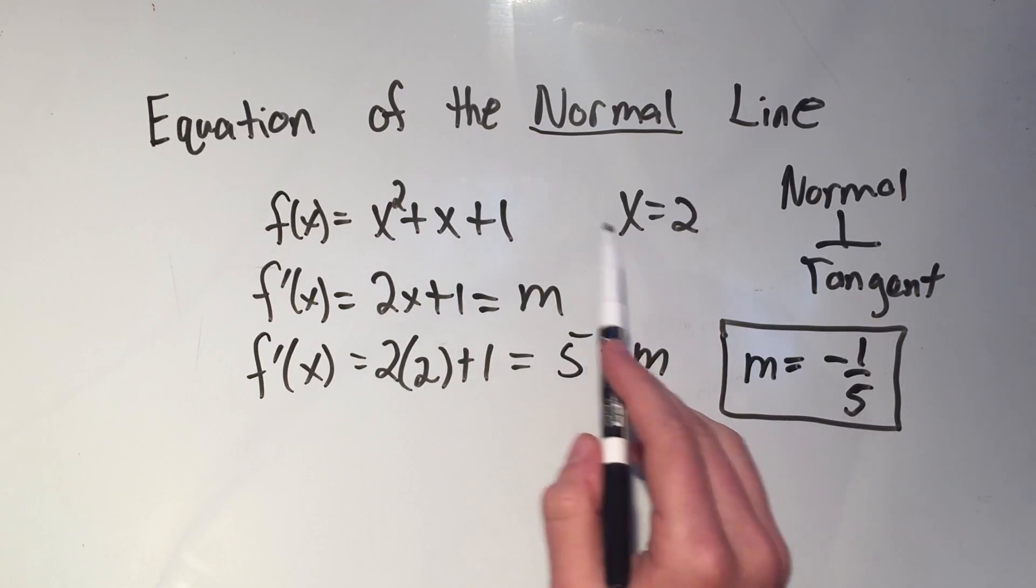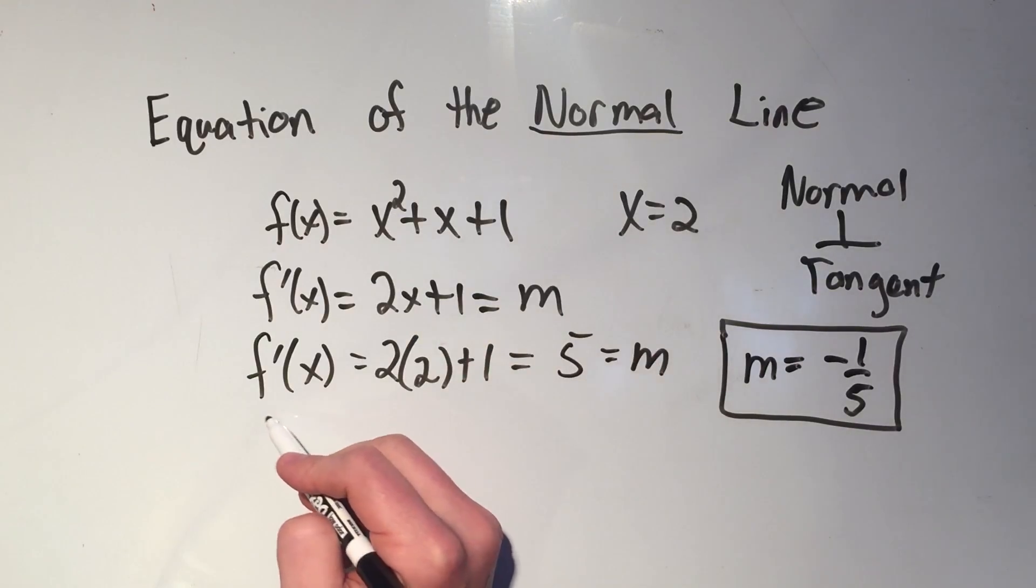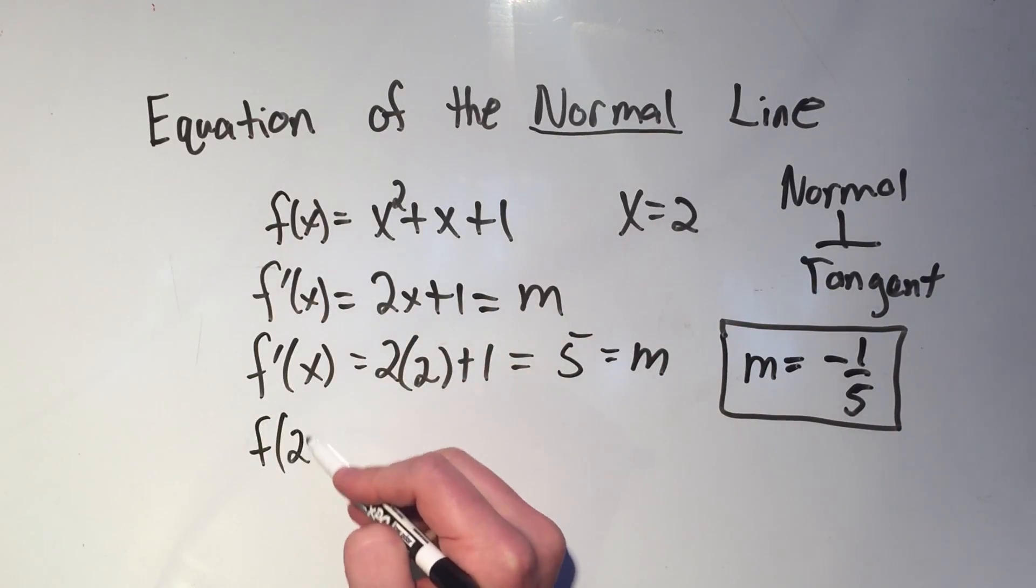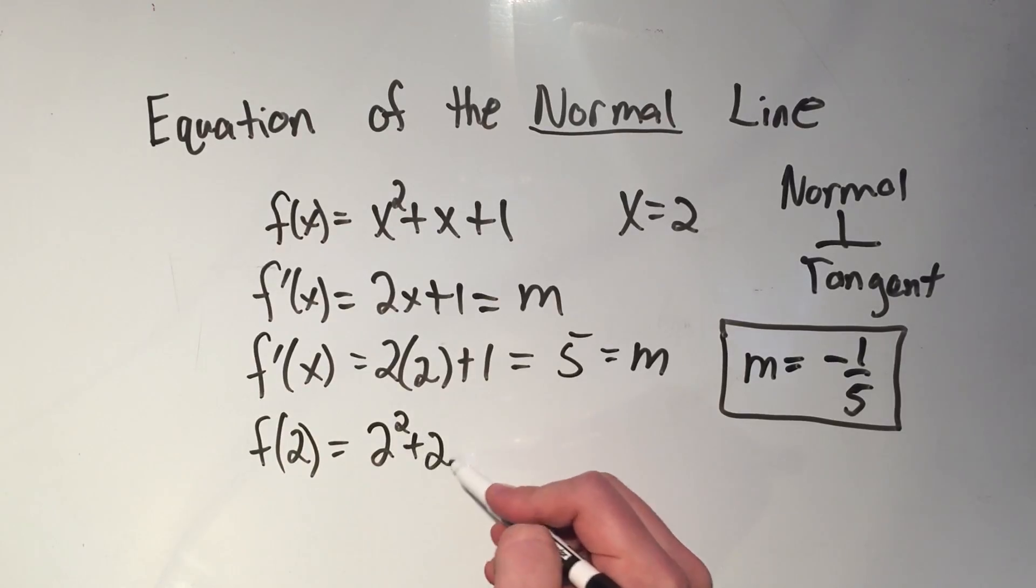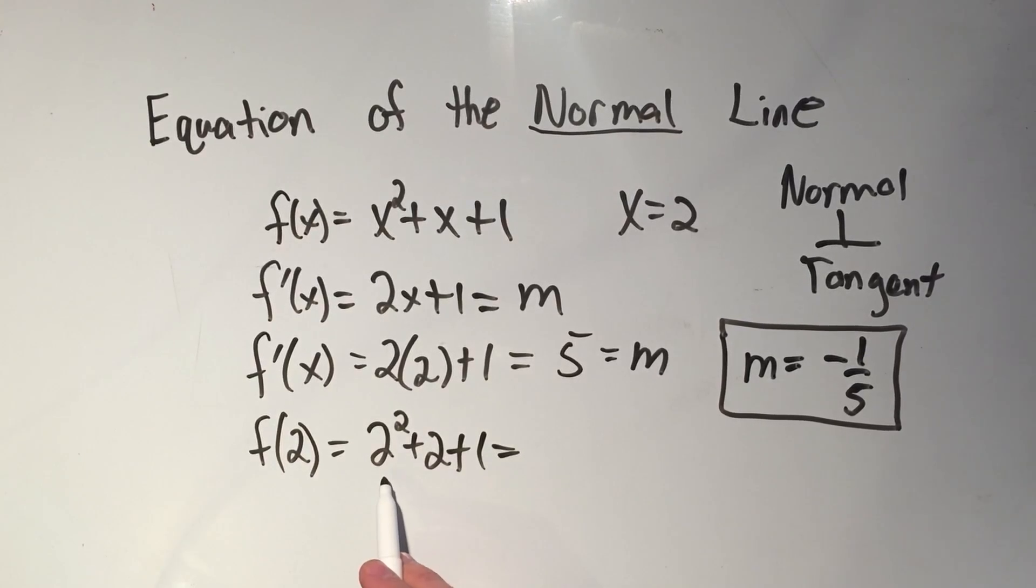To find the point, I'll plug my x value into the function to get my y value. So that's 2 squared plus 2 plus 1. 2 squared is 4, plus 2 is 6, plus 1 is 7.